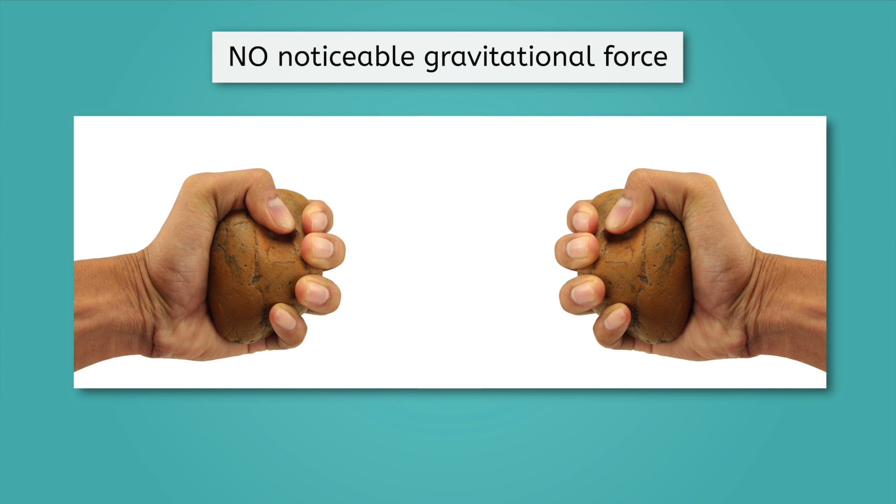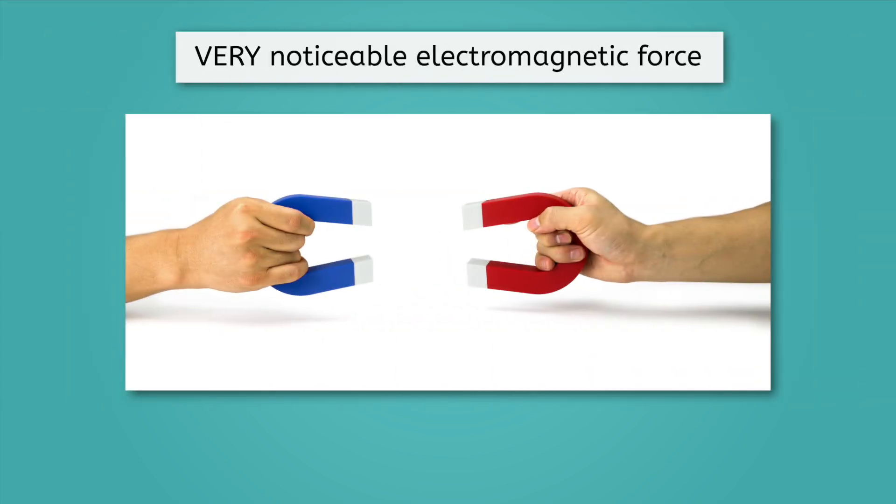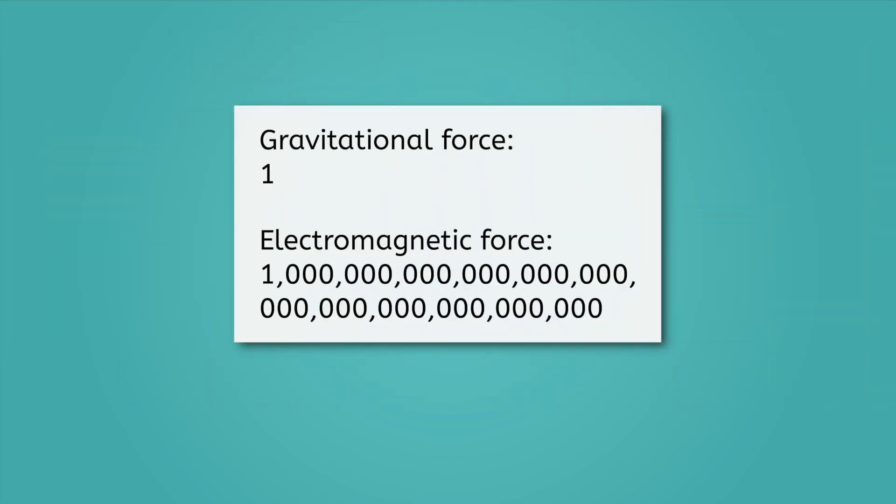Think of it this way. You would never be able to feel the gravitational attraction between two small objects in your hands. But if those objects were magnetic, you would definitely feel the force pulling them together. The electromagnetic force is thought to be stronger than the gravitational force by a factor of 10 to the 36th. That's a lot of zeros.